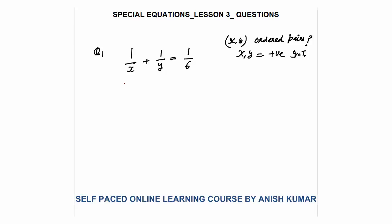Hello, this is special equation lesson 3. In this, I will discuss new types of questions on this topic. The first question is: 1/x + 1/y = 1/6. I need to find the ordered pairs (x, y) where x and y are positive integers.